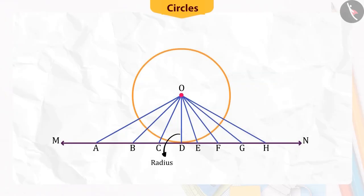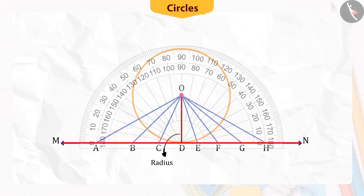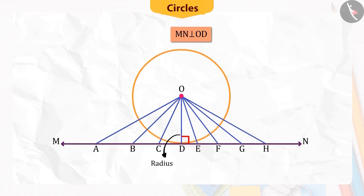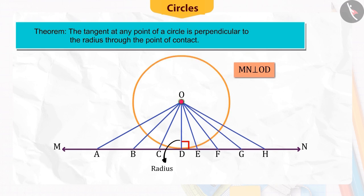Also, if we measure the angle between the tangent MN and the line OD, you will find that it is right-angled. That is, line OD is perpendicular to tangent MN. Based on this activity, we can say that the tangent at any point of a circle is perpendicular to the radius through the point of contact.